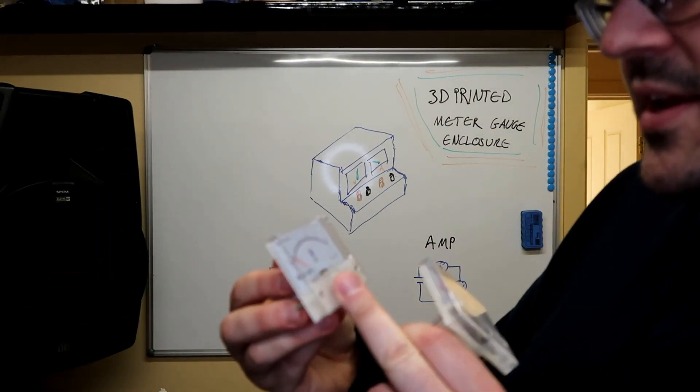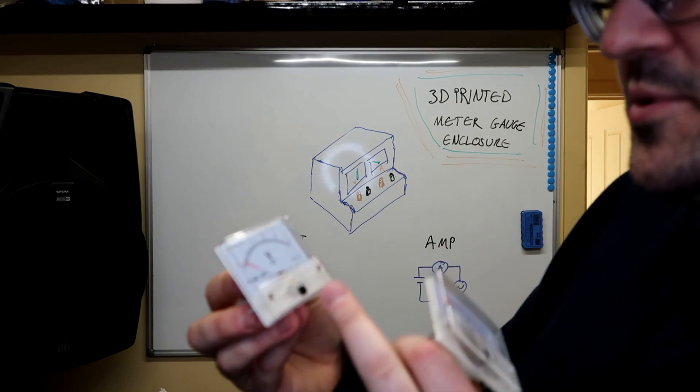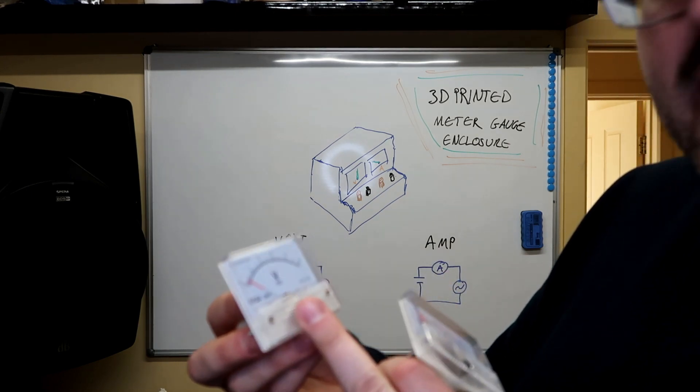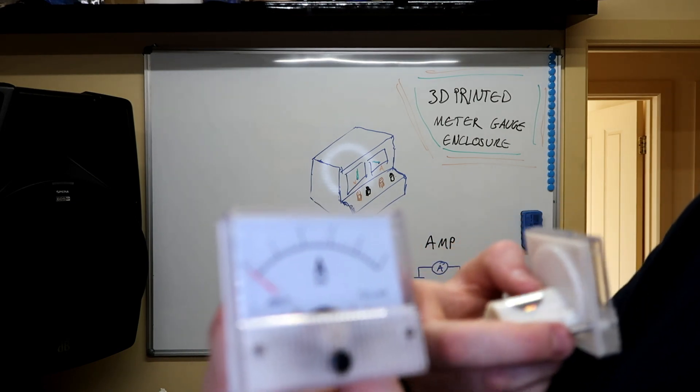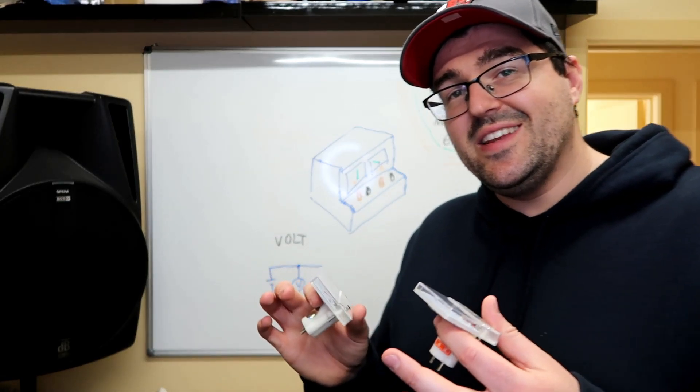Now the volt meter does a range from 0 up to 5 volts DC and the amp meter goes from 0 to 5 amps DC as well. Instead of just having these sitting there on the table and then I have some leads to connect to the back or just clip alligator clips onto it.